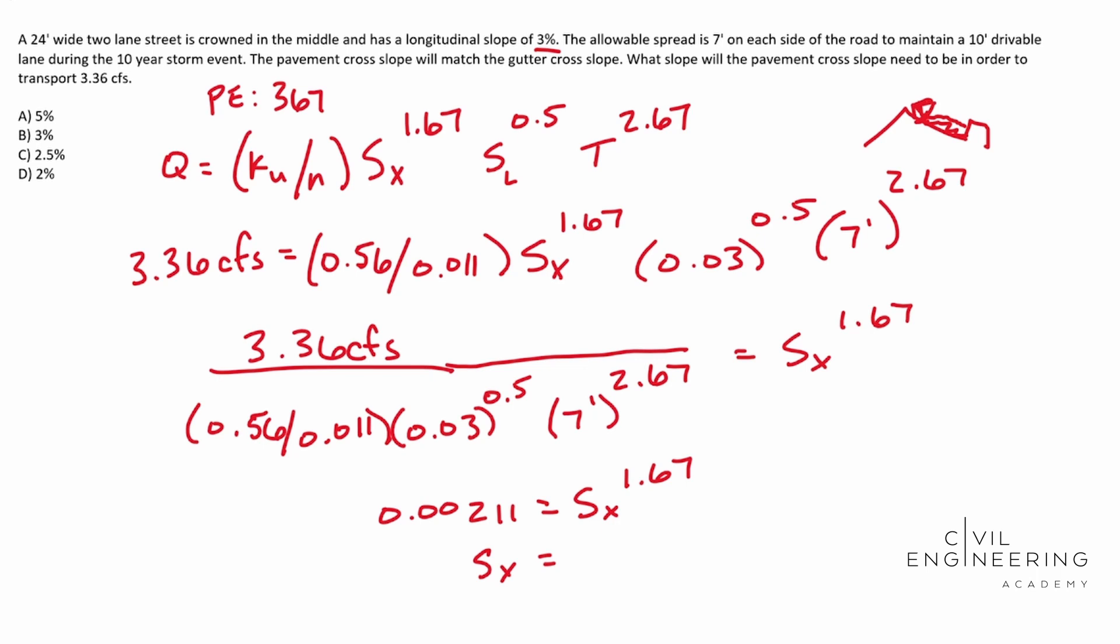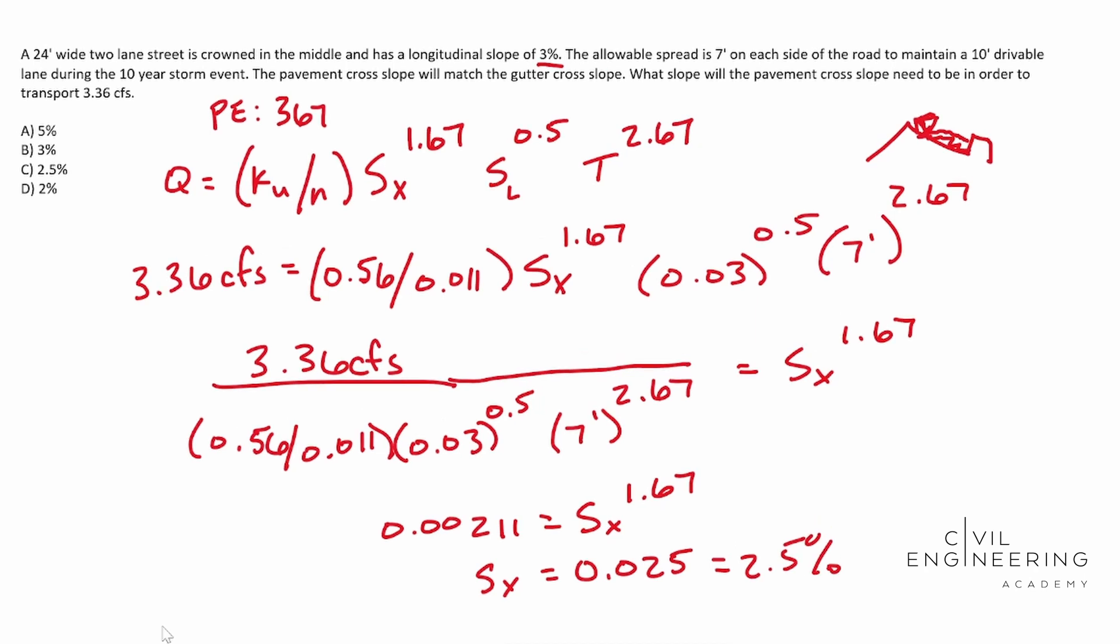So with that said, the answer for this one ends up being 0.025 and this is equal to 2.5%. So just as a reminder, I thought it was worth pointing out this N right here. The reason why we can use 0.011, this is where your engineering judgment comes in. Whenever you're dealing with curb and gutter, you're only going to be talking about roads that are paved.